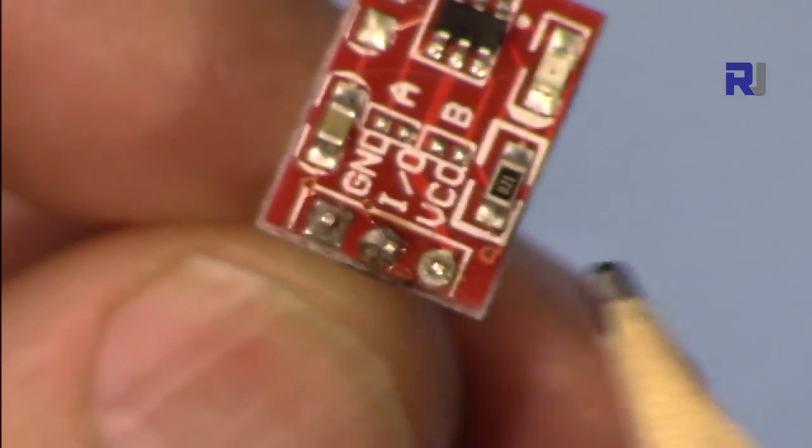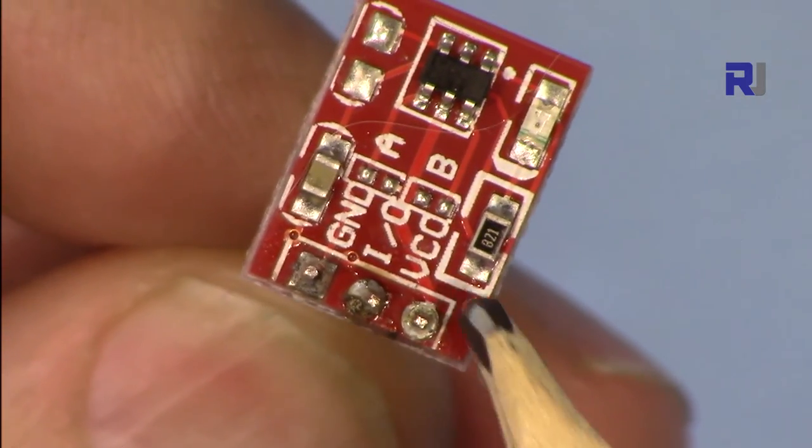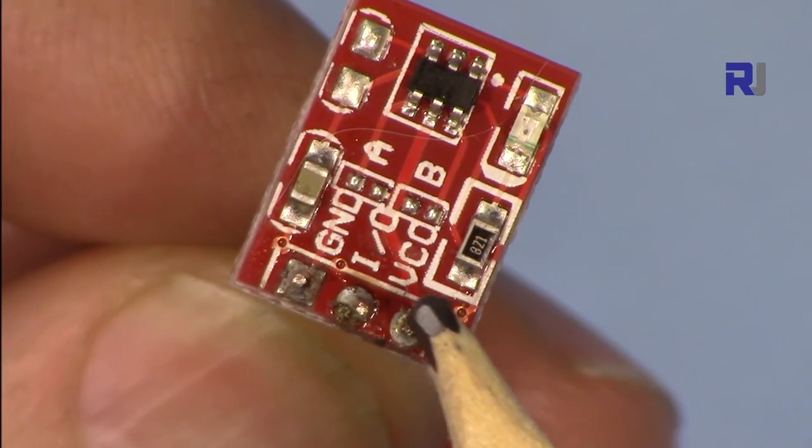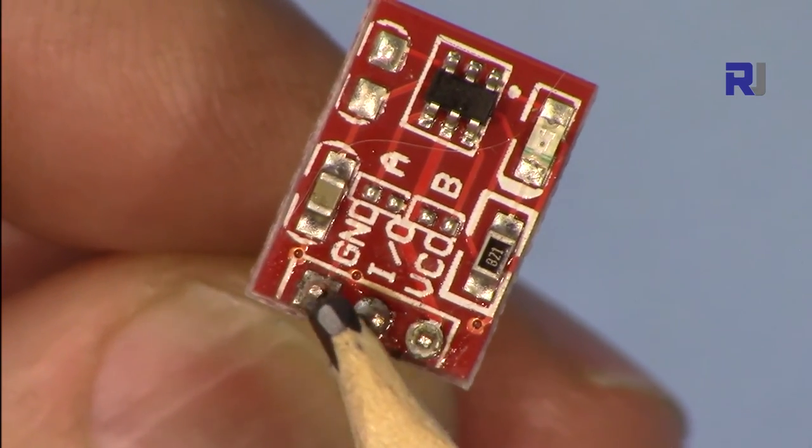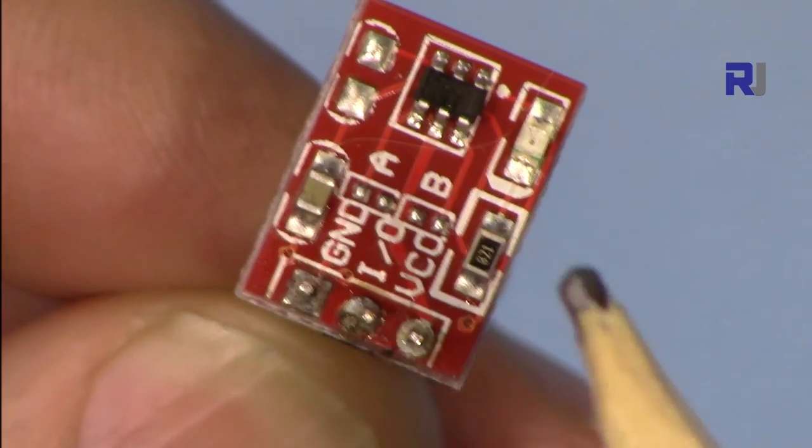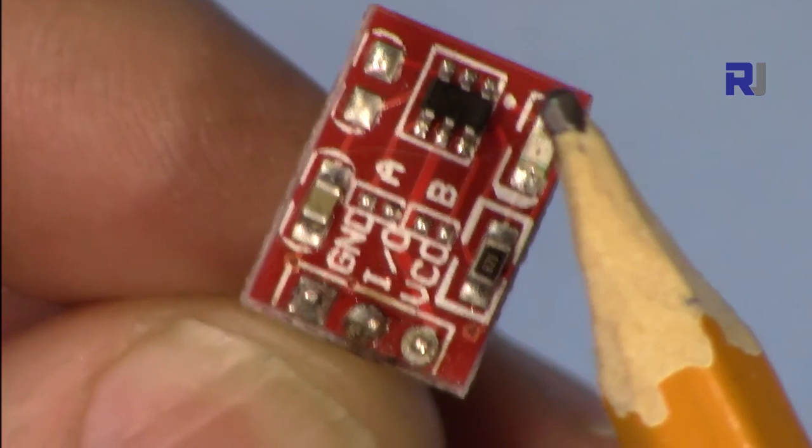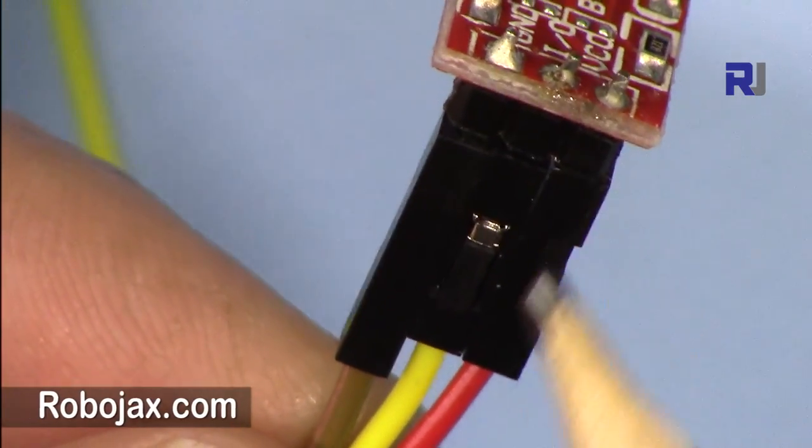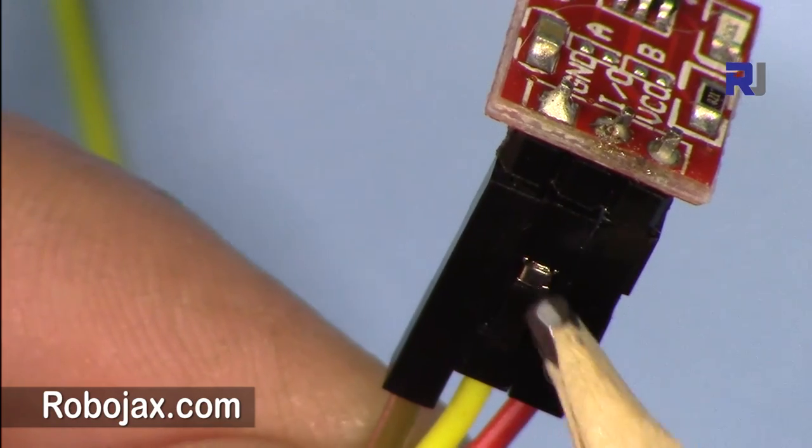We have here three pins. One is VCC, this goes to 5 volts. It can work from 3.3 to 5 volts. The last one is for the ground, and this is the data output. We also have an LED here. When you touch it the LED will be on.